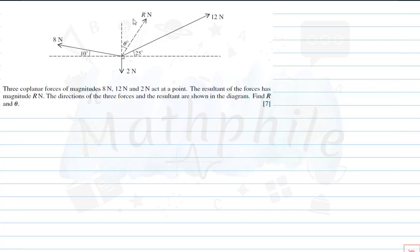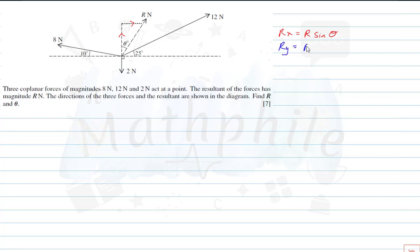Let's start off by breaking the resultant force into components. The resultant in the x-direction is going to be R sine theta, because it faces theta directly. And the resultant in the y-direction is going to be R cos theta.